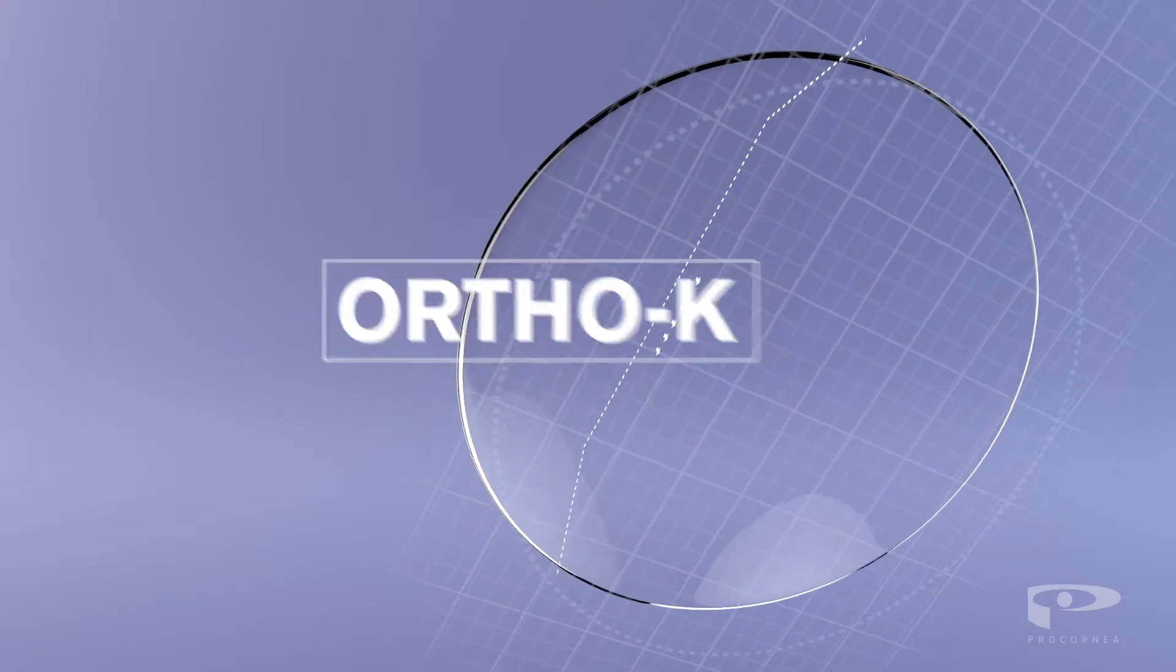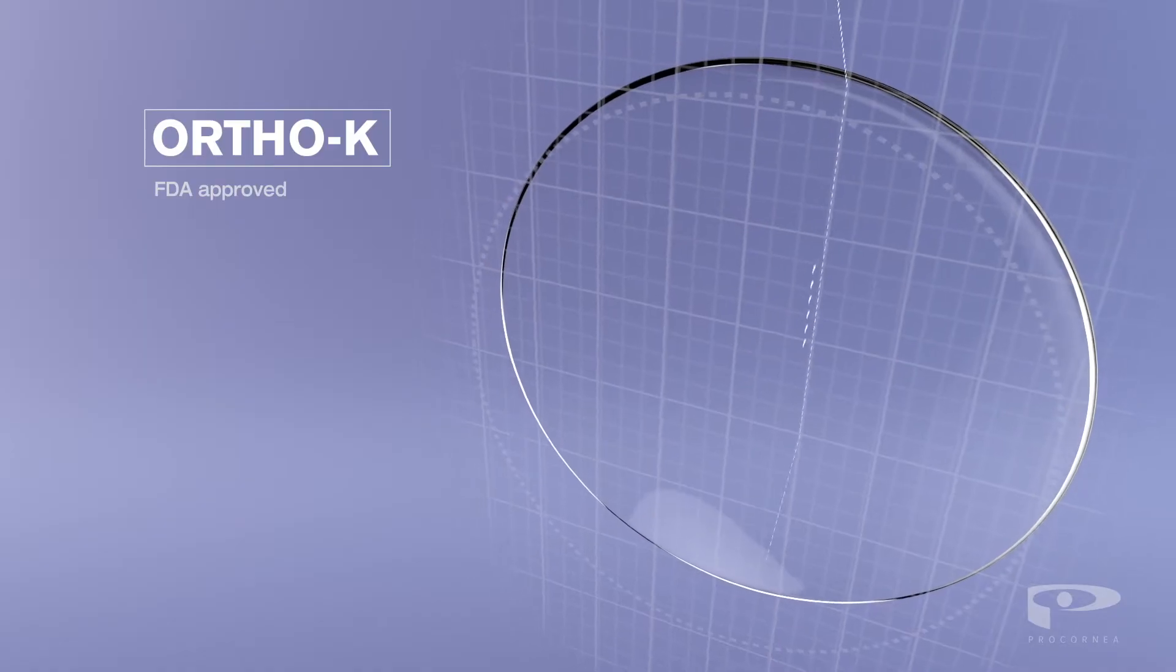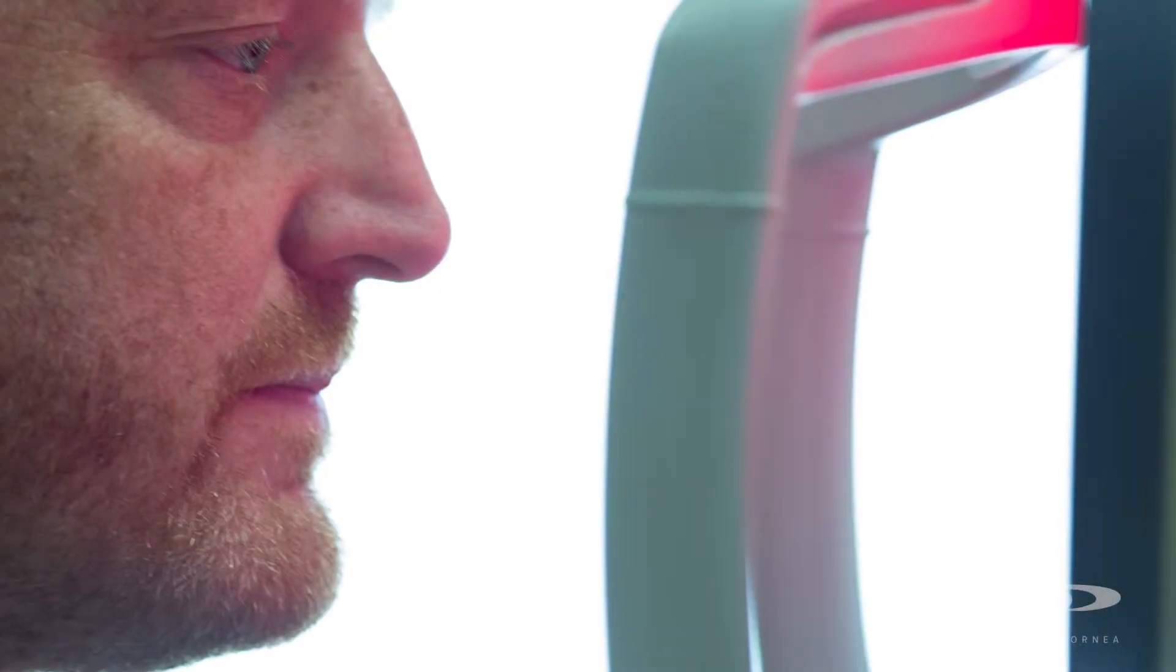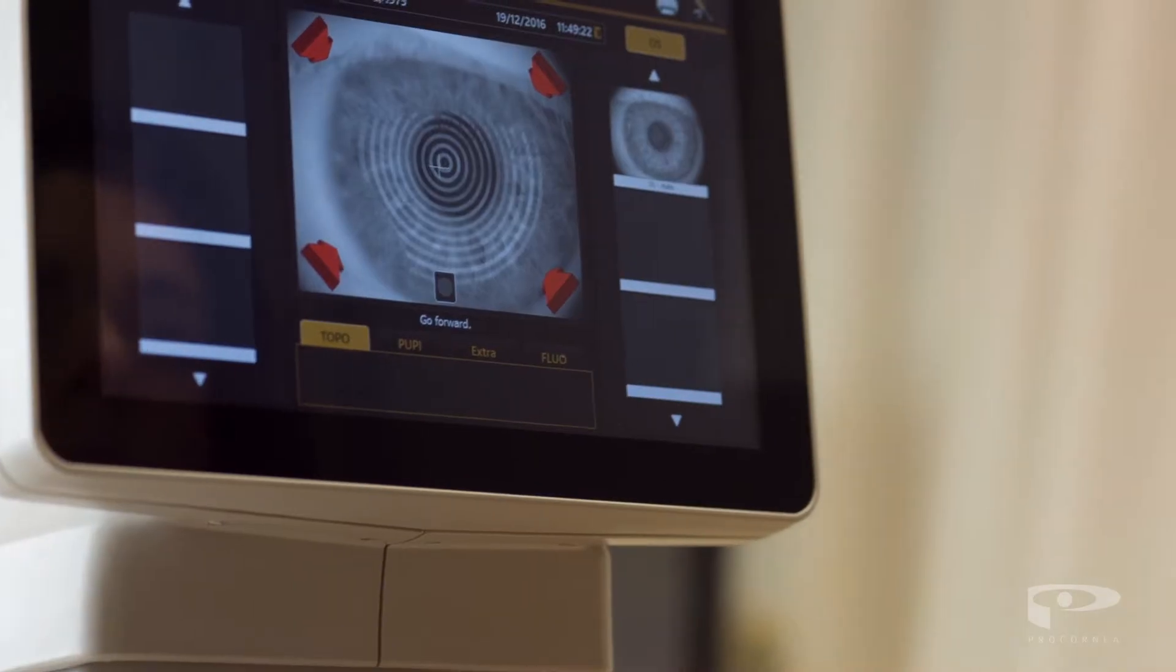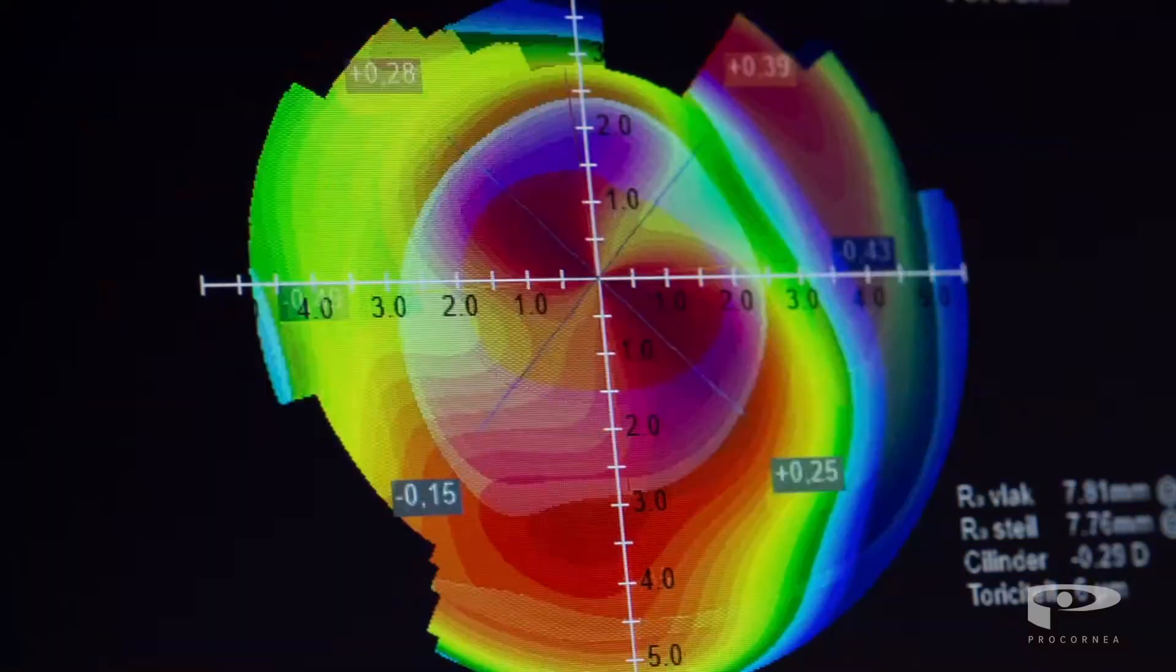Orthokeratology, or Ortho-K, is a revolutionary FDA-approved technique that also changes the shape of the cornea. It is a non-surgical procedure that is completely reversible and extremely safe, and avoids complications such as dryness.